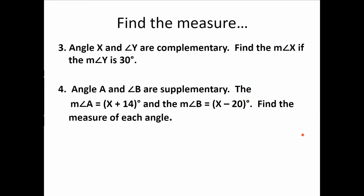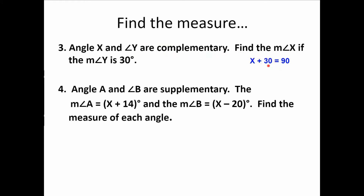Angle x and angle y are complementary, meaning they add up to 90 degrees. Find the measure of angle x if the measure of angle y is 30 degrees. Set up the equation: x plus 30 equals 90. To get rid of the plus 30, subtract 30 from both sides, giving us x equals 60 degrees for the missing angle.